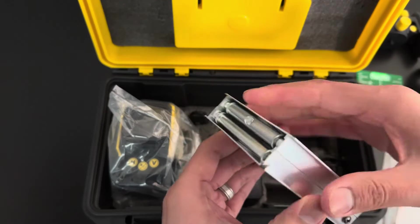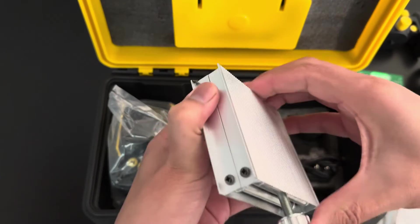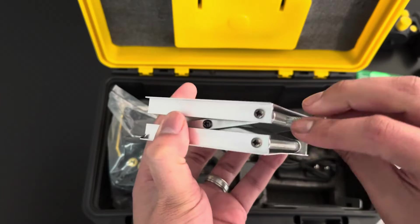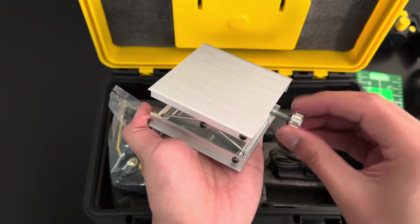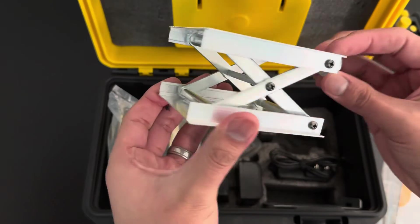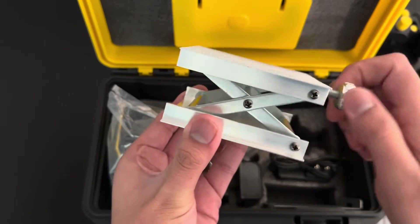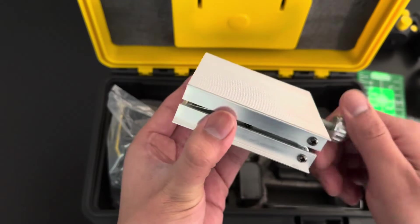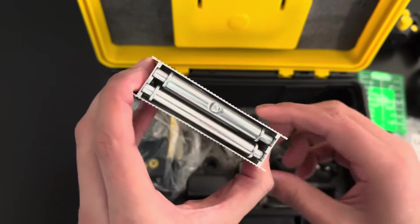And then it does come with a little table here in case you want to put this on the floor or some kind of surface. So it does come with this little, not sure what they call it, but this little guy.